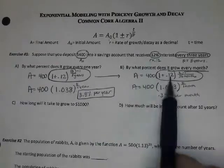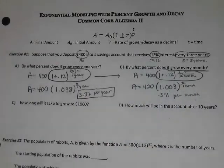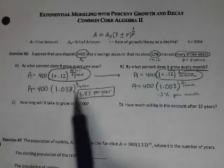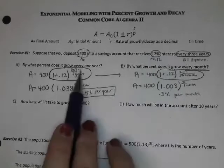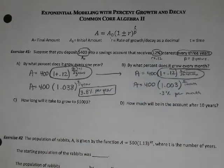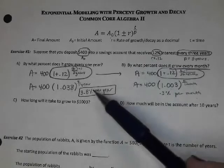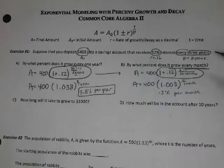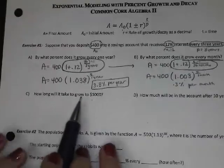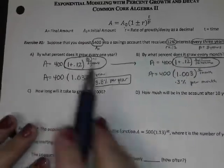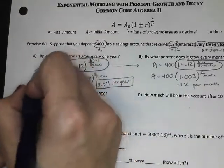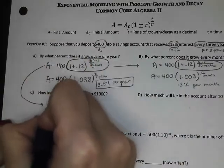And again, all four of these formulas will give you the same follow-up answers. They just give you a feel for what the monthly growth is versus the yearly growth versus the every three-year growth. So when they go and ask you a follow-up question, I would use the original function. How long will it take to grow to 1,000?